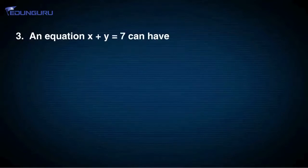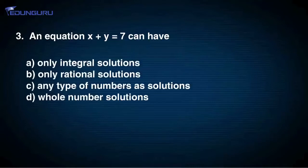The third and final question: The equation x plus y equals 7 can have — option A: only integral solutions, option B: only rational solutions, option C: any type of numbers as solutions, option D: whole number solutions only.